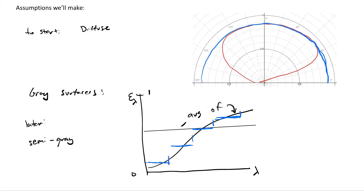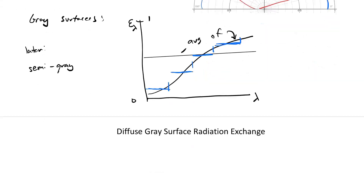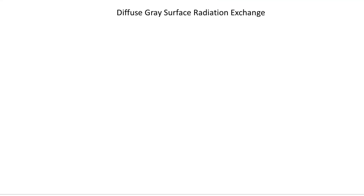Let's now talk about diffuse gray surface radiation. We've been talking about blackbody radiation exchange — let's get into diffuse gray surfaces. Two key assumptions: one, diffuse, meaning no angular dependence; two, gray, meaning no wavelength dependence. But absorptivity is no longer one. So this is diffuse gray radiation exchange.